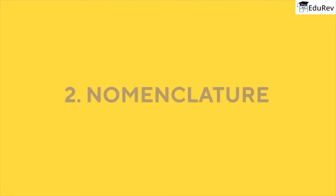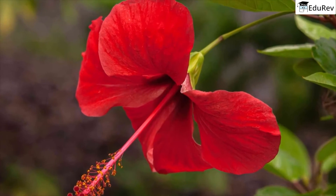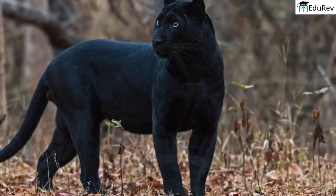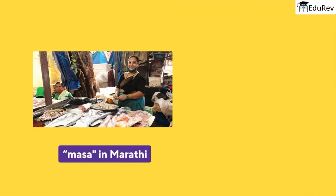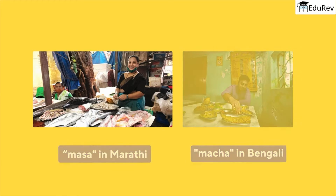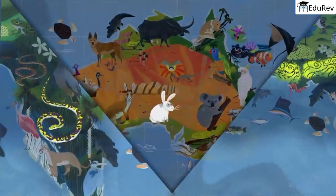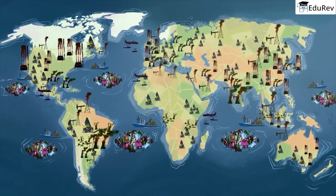Let's decode the second principle of taxonomy — that is nomenclature. It simply means naming an organism. As we are aware, local names of plants and animals might be different for different regions in a country, which creates confusion while communicating. For example, a fish is called 'masa' in Marathi and 'machha' in Bengali, but we commonly refer to it as fish. So it is necessary to standardize the naming of living organisms so that they are known by the same name — this is referred to as nomenclature.